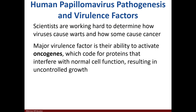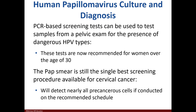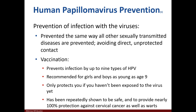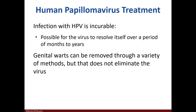Most sexually active adults will acquire HPV, and the mode of transmission is direct contact or auto-inoculation. PCR and Pap smears can be used in screening and diagnosis. Protection is a preventative measure, along with the HPV vaccine that contains up to nine types of HPV, providing protection against cervical cancer and warts. Sometimes other strains not in the vaccine may cause cancers. The Pap smear is crucial for detecting cervical changes and should be performed yearly. Infection is incurable, but some individuals may rid the body of the virus within years.